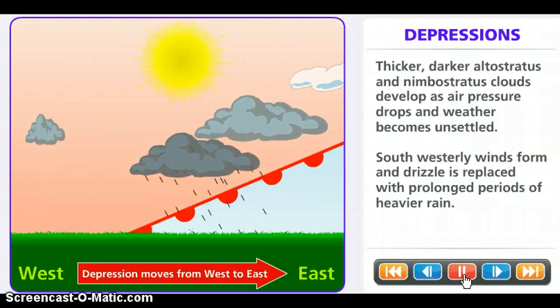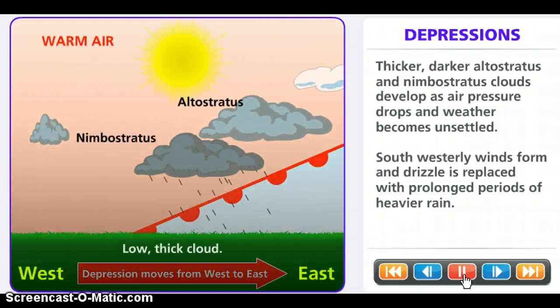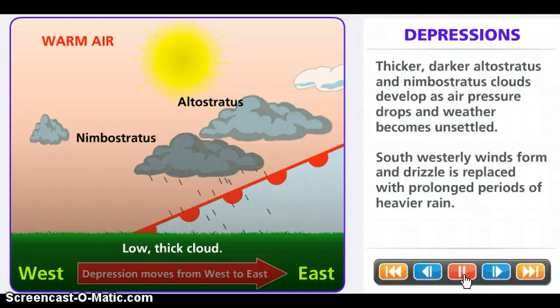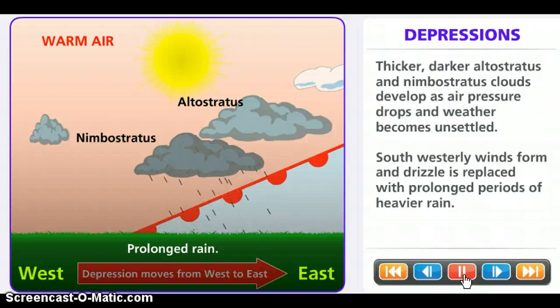Thicker, darker, altostratus and nimbostratus clouds develop as air pressure drops and weather becomes unsettled. Southwesterly winds form and drizzle is replaced with prolonged periods of heavier rain.